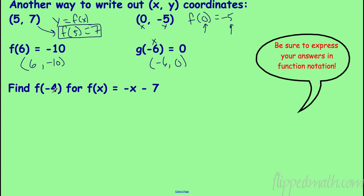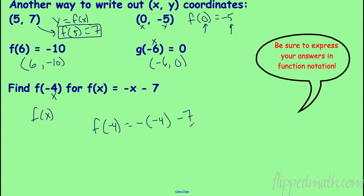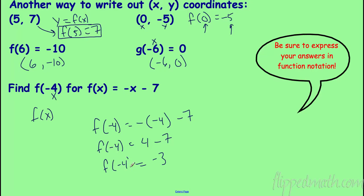Let's try a problem. We want to find f(-4), so wherever I see x I plug in -4. f(x) = -x - 7, so f(-4) = -(-4) - 7. A lot of people get confused — the negative in front of x was already there; it's just a coincidence that my input also has a negative. Negative of negative 4 is positive 4, and 4 - 7 = -3. So f(-4) = -3. We always express our answers in function notation.